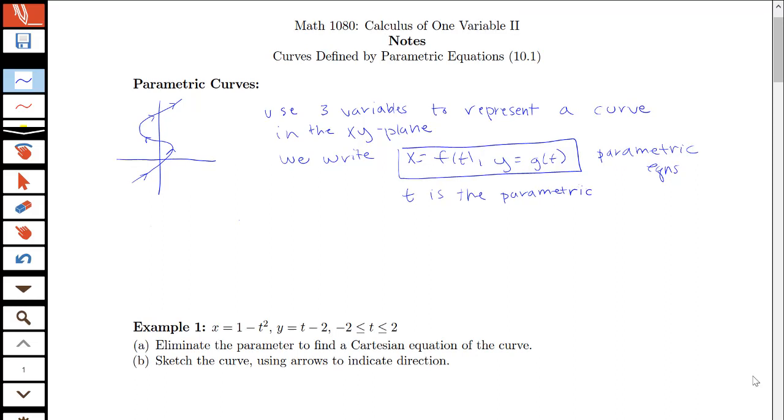Let's finish the definition of our parametric curves first before we look at any further examples. What we're seeing about these parametric equations is that as t varies, the point on the graph given by (x,y) = (f(t), g(t)) varies and traces out our curve c, called a parametric curve.